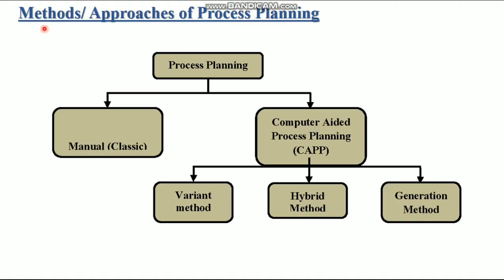The methods or approaches of process planning: basically, process planning is divided into two types — manual process planning and computer-aided process planning (CAPP). Computer-aided process planning is further divided into two types: variant type and generative type, also called the pre-generative method.